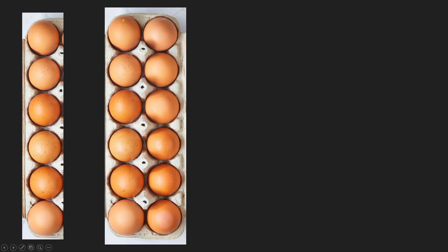Then we have two-dimensional arrays. For 2D arrays, we have two dimensions — rows and columns. So we have row indices 0, 1, 2, 3, 4, 5, and column indices 0 and 1. If we want to access a particular egg, we access position [0,0]; the next one is [0,1]. This one would be [1,0], and the next [1,1], and so on. That is what we call a 2D, or two-dimensional, array.